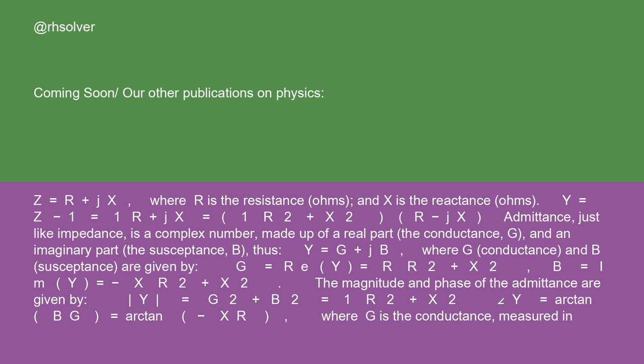The magnitude and phase of the admittance are given by |Y| = √(G² + B²) = 1/√(R² + X²), and ∠Y = arctan(B/G) = arctan(-X/R).